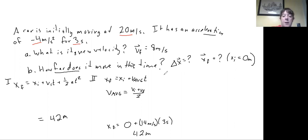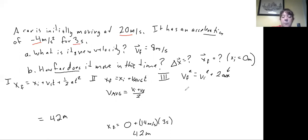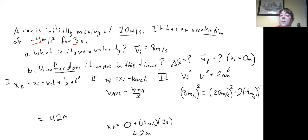Option three uses the vf squared equation: vf squared equals vi squared plus 2a times delta x. Our final velocity was 8 meters per second, so 8 squared is 64 meters squared per second squared. Vi squared is 20 squared, which is 400 meters squared per second squared. So 64 equals 400 plus 2 times negative 4 times delta x.